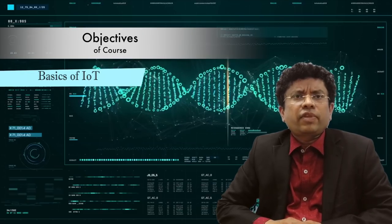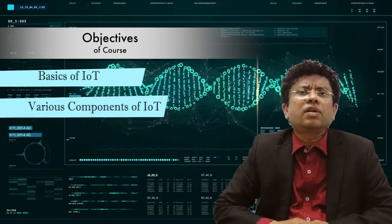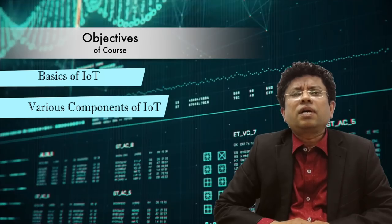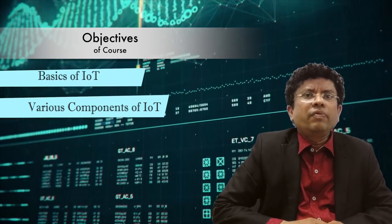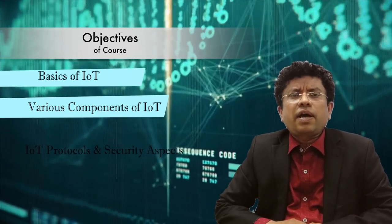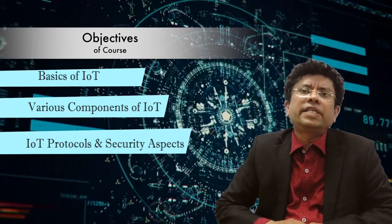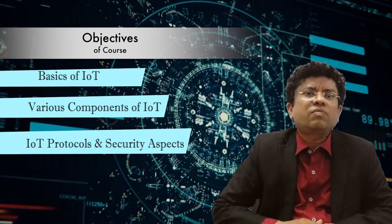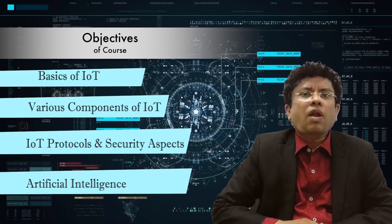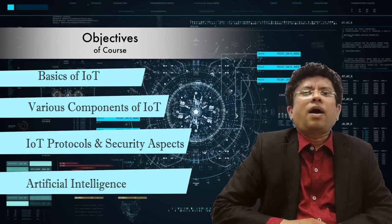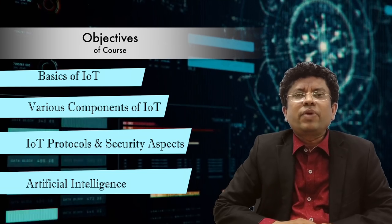Therefore it is important to understand the underlying components, the entire ecosystem, integration issues, and applications. The key objectives of this course are to learn about the basics of IoT and various components of IoT including sensors, actuators, and communication devices. We will look at IoT protocols and security aspects of IoT, discussing state-of-the-art IoT system architecture. We will also look at cloud-based design and artificial intelligence and deep learning based data analytics.